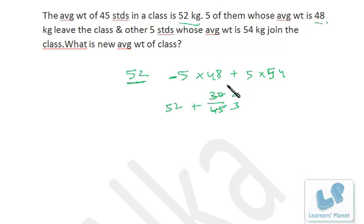So in all, the total gain is 30 and the total number of students is 45, so average gain is 2/3. So the new average is 52 and 2/3, or we can say 52.67.